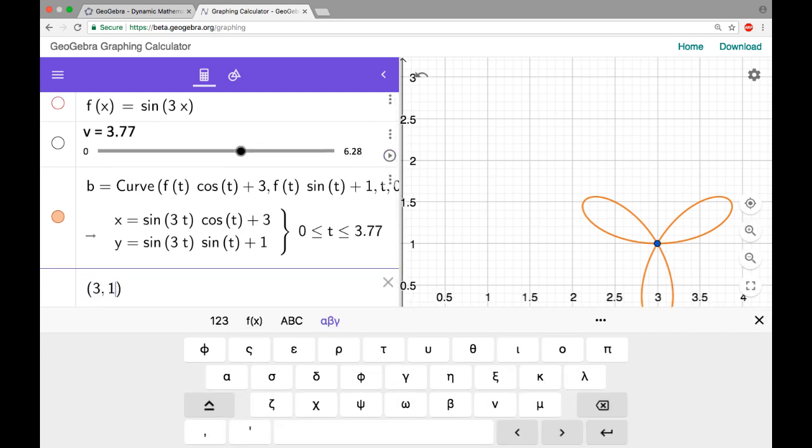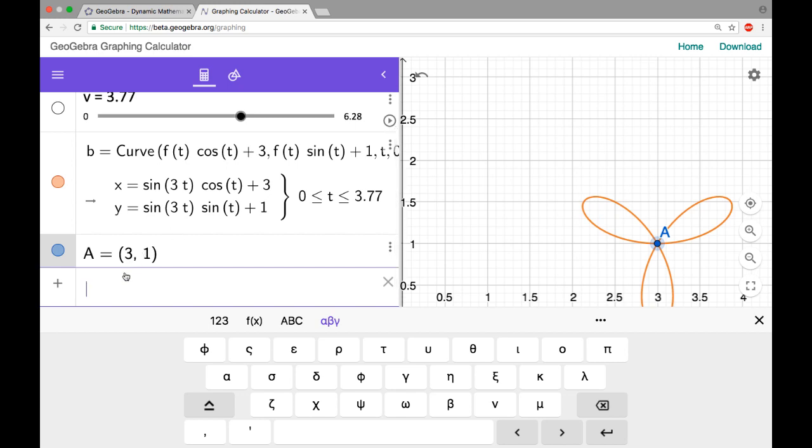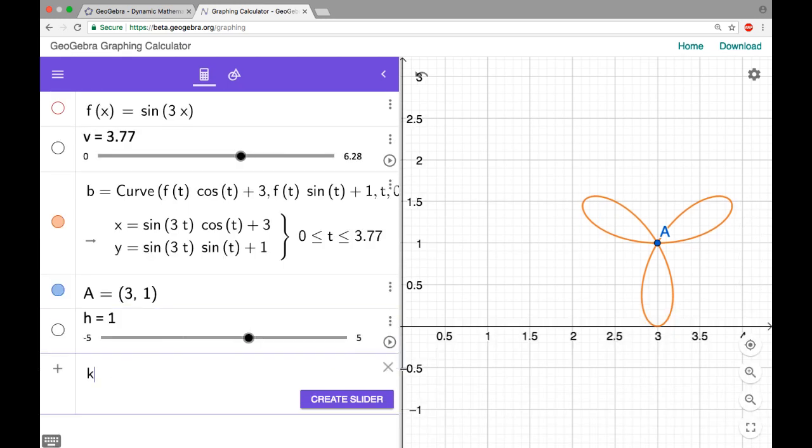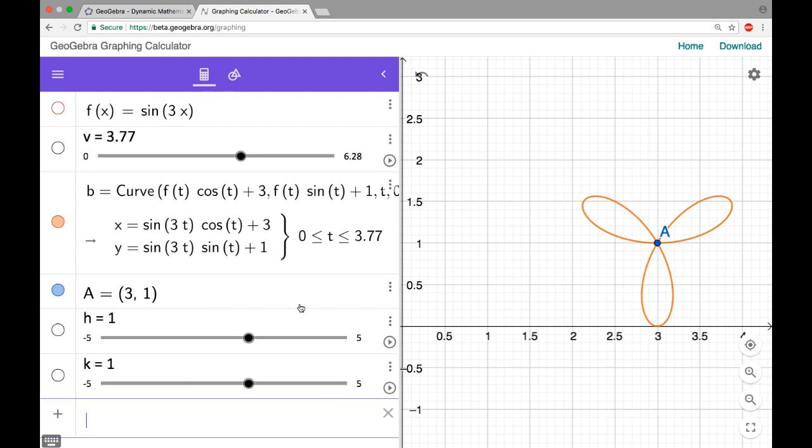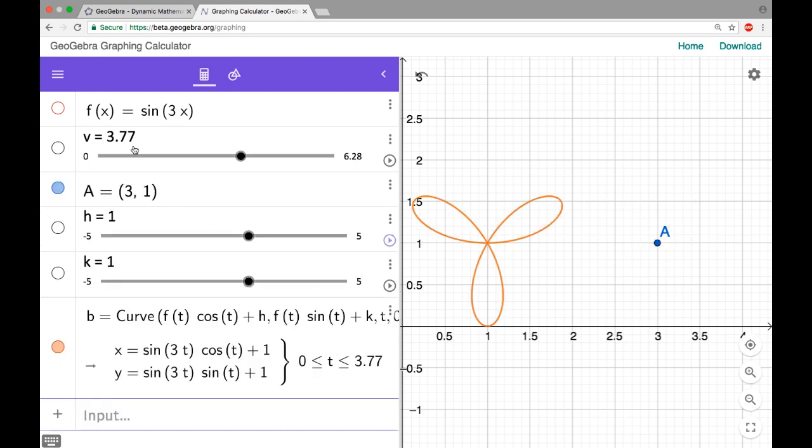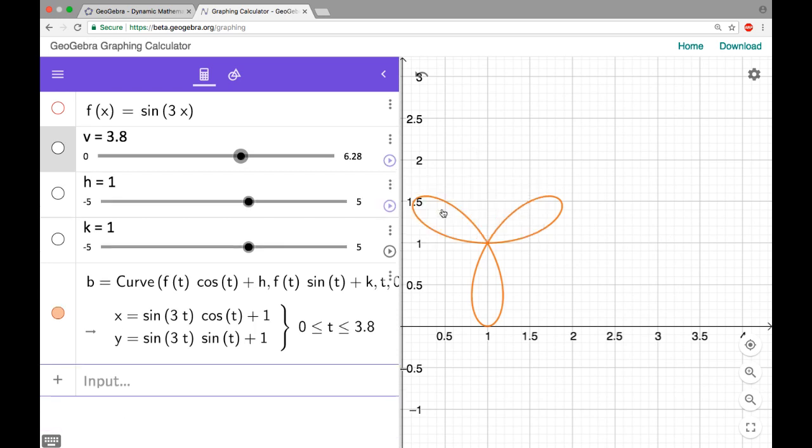And it's actually centered at 3, 1. So maybe I want to make that more general. I could say h, let's let h be a slider, and then a slider for k. And then if we go back up into the parametrics, double click, I'm gonna change this to plus h and I'm gonna change this one to k. And then I have this ordered pair, I'm actually just gonna delete that.